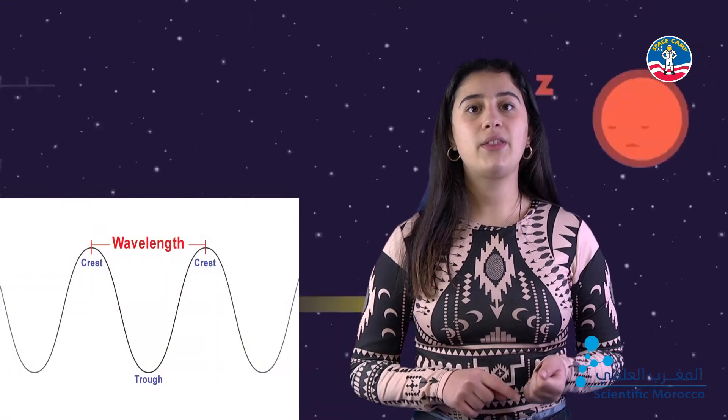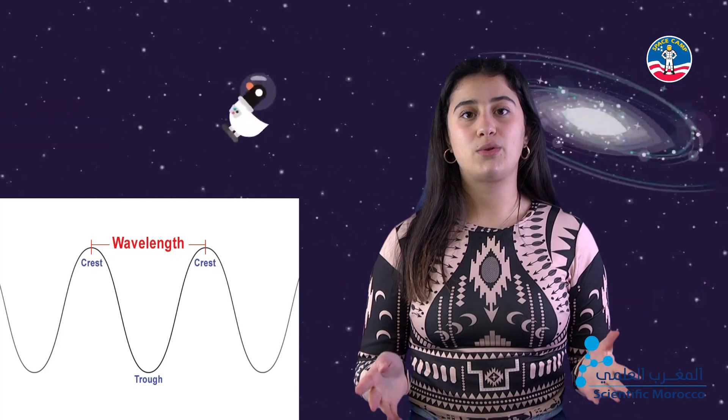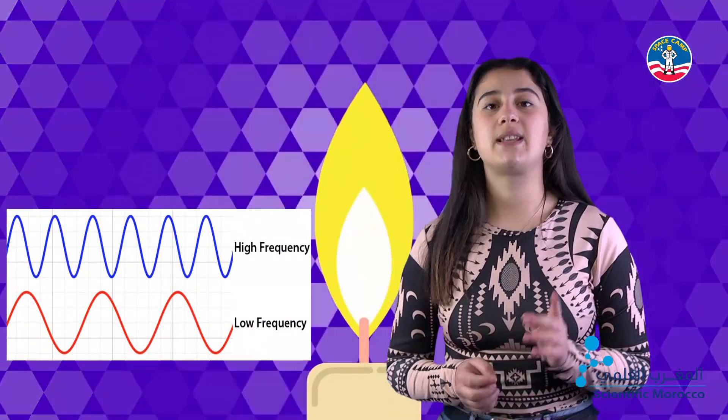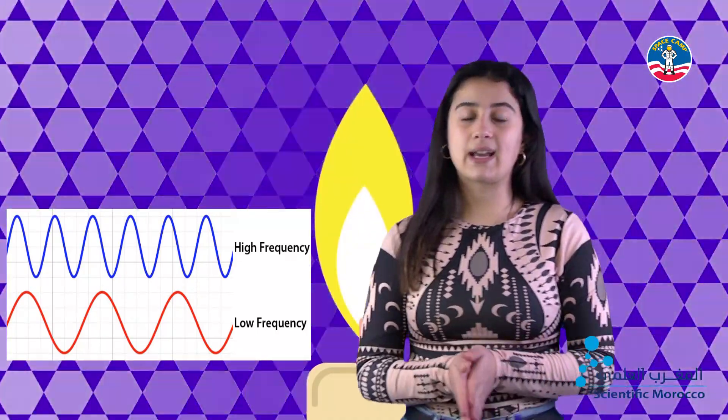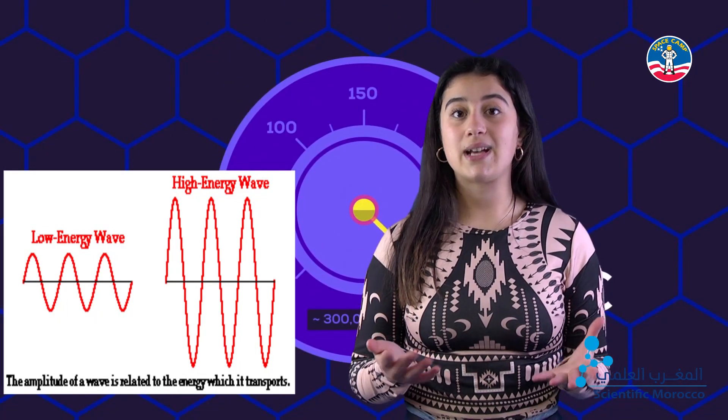Each electromagnetic wave has its own identity. Although they come from the same family, they are slightly different from one another. The divergences between visible light and other waves reside in three main factors: the wavelength, which is the distance between two corresponding points on successive waves, usually peak to peak; the frequency, which is the number of waves passed per second, with its unit being hertz; and the energy, which depends on how long or short the wavelength is, and so does the frequency.